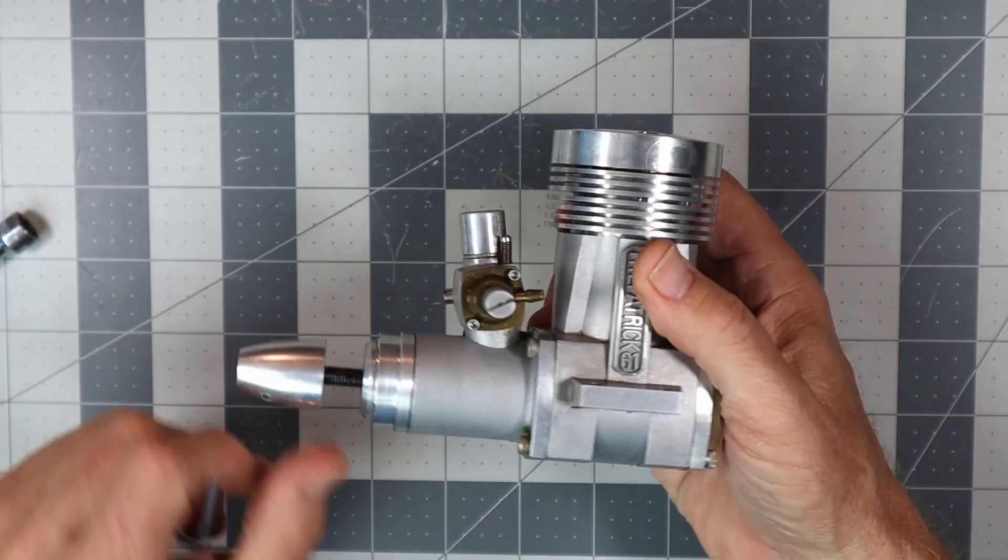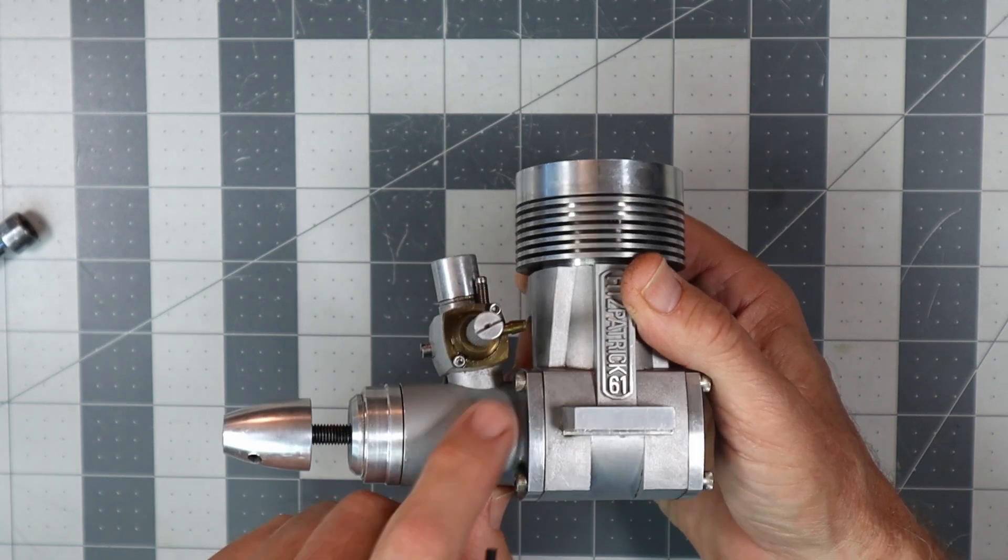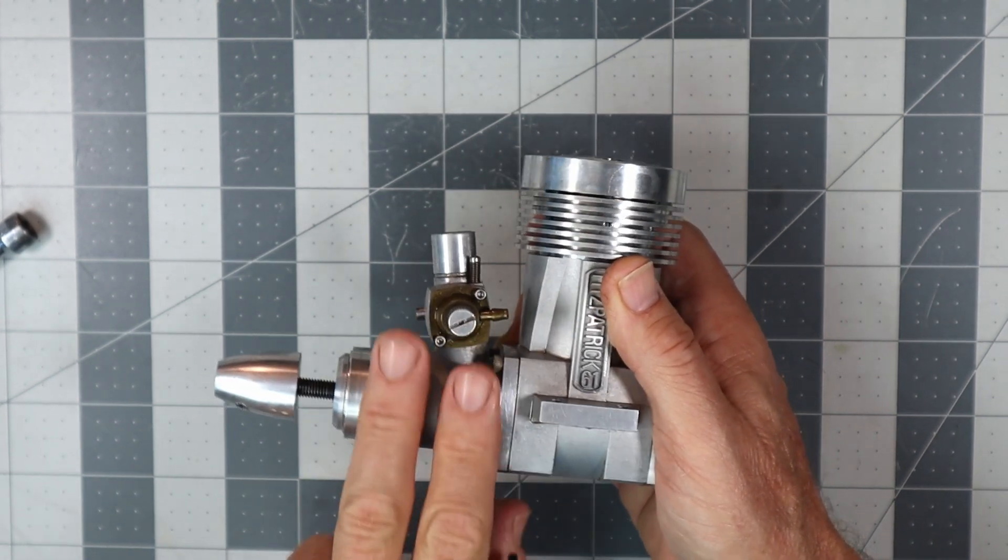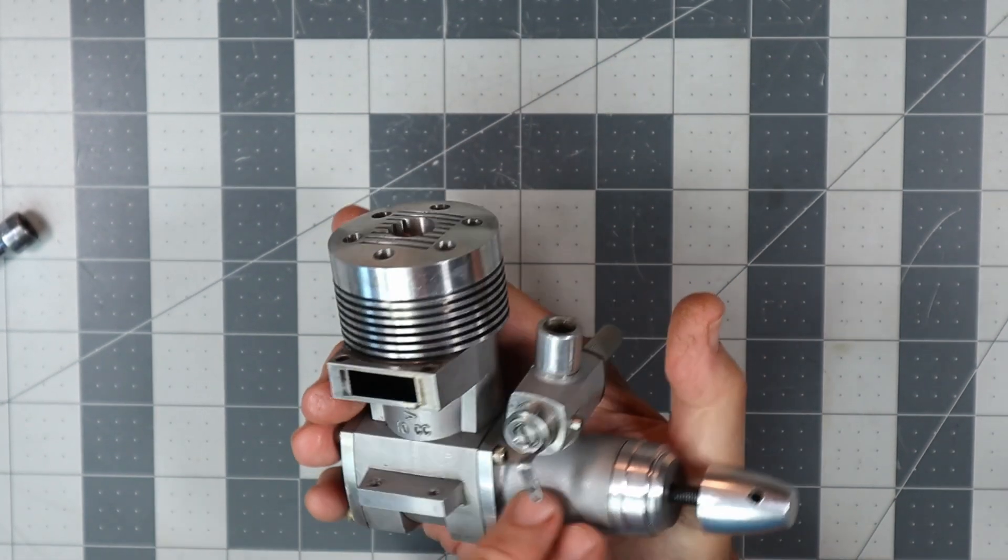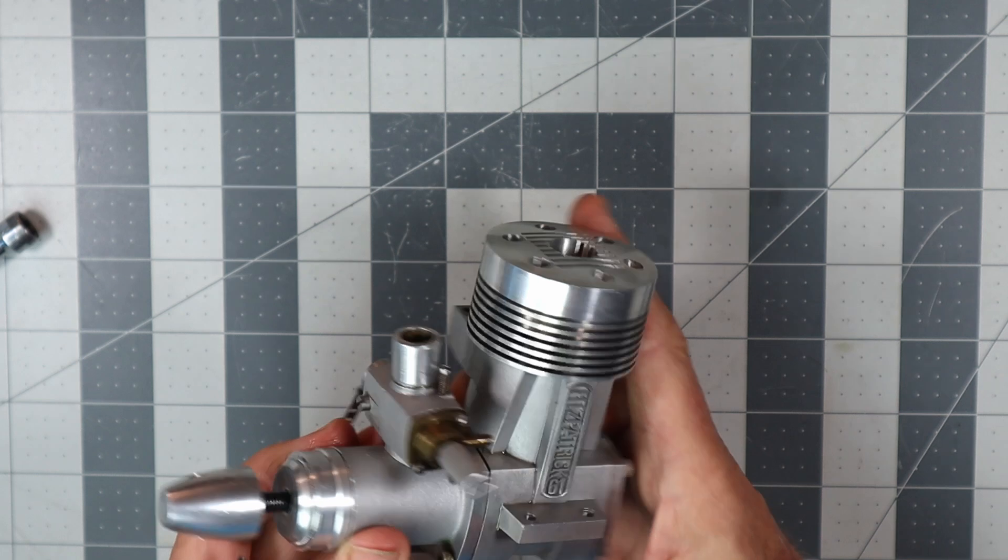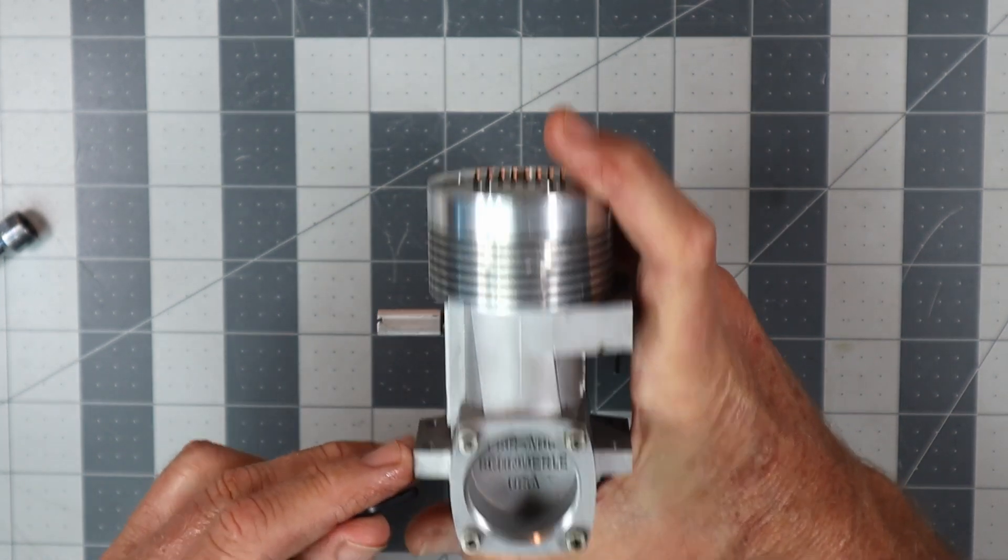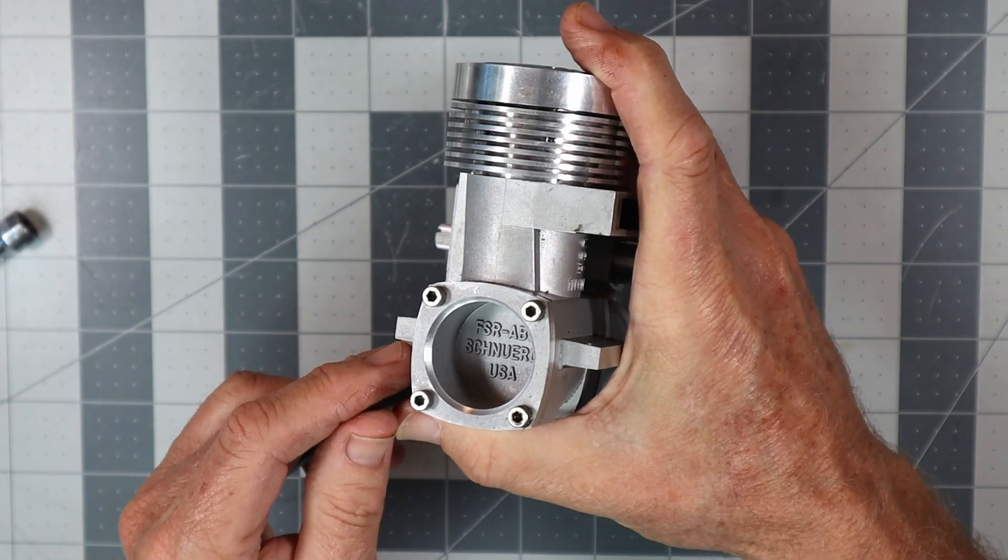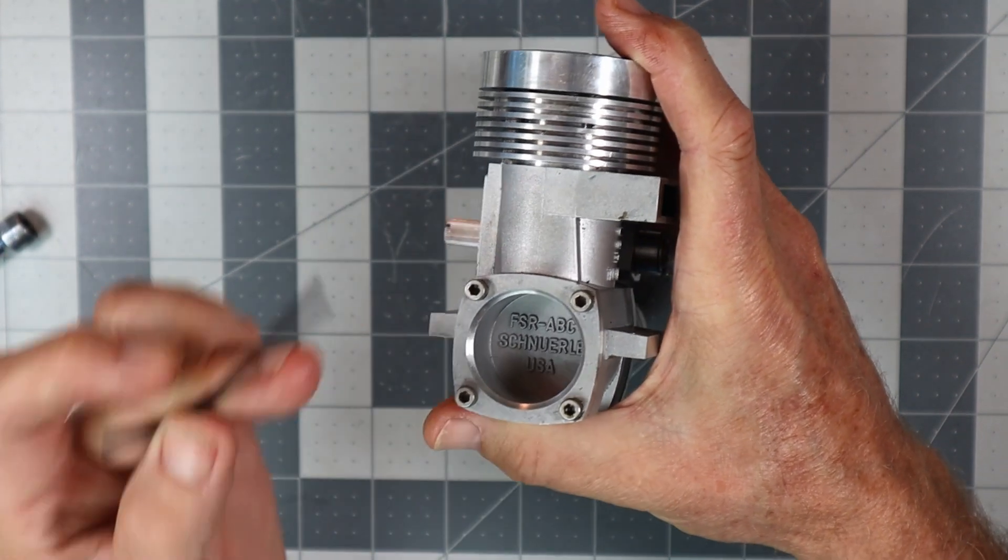Now you might recall from the quick look video that this carb is an integrated part of this casting. Therefore it cannot leak, therefore it cannot come off.